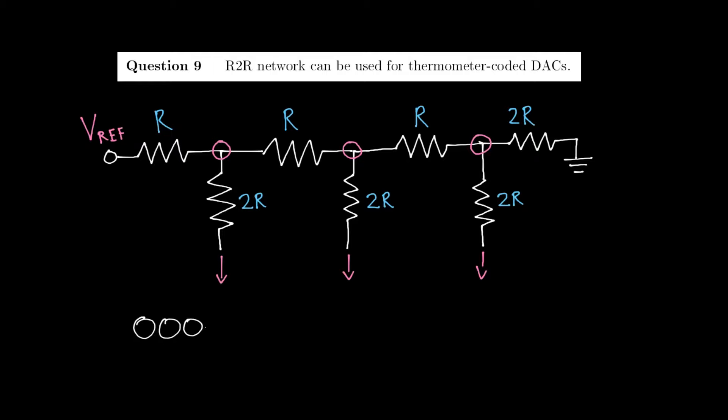The number 000111 would be followed up by the number 001111. From this you can conclude that the statement above is therefore false. R2R networks work well for binary coded DACs, not for thermometer coded DACs.